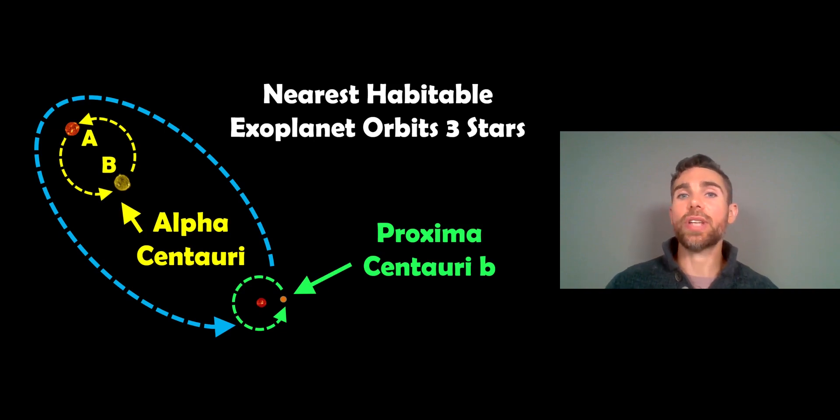Welcome to this video, where I want to have a look at our nearest habitable exoplanet to the solar system or to Earth. Now it's not just a planet orbiting a star, this particular exoplanet that's habitable actually orbits three stars, it's in a triple star system, so it makes it a little bit more interesting than a normal exoplanet.